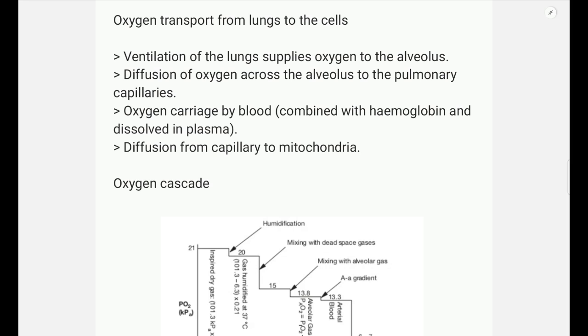We will discuss the transport of oxygen from lungs to cells. When we breathe, there is ventilation of lungs and this ventilation supplies the oxygen to the alveoli. In the alveoli, the oxygen crosses the alveolar capillary membrane and reaches the capillary blood. Here oxygen is carried by blood either in combined form or in dissolved form. From here the blood moves into the capillaries where it diffuses to the mitochondria, which is the final destination of oxygen.